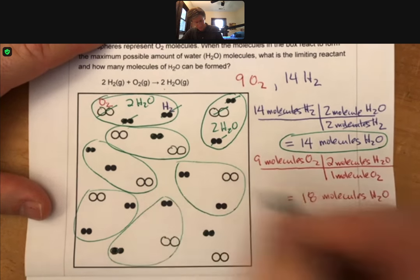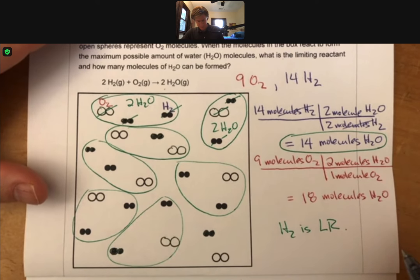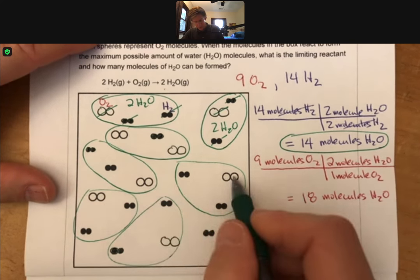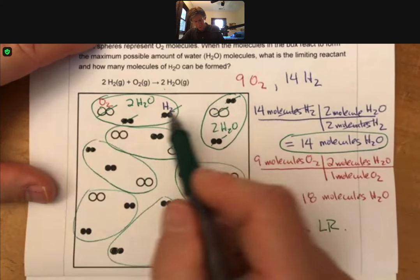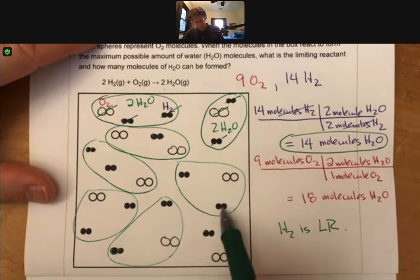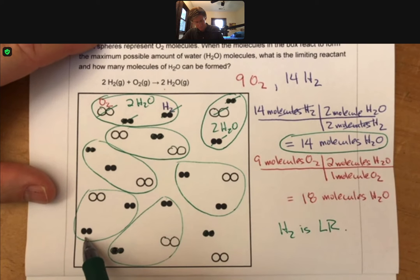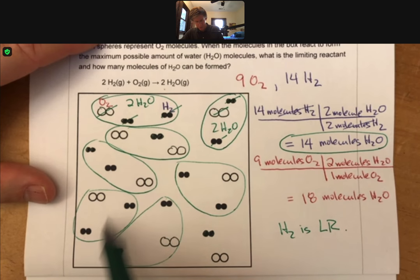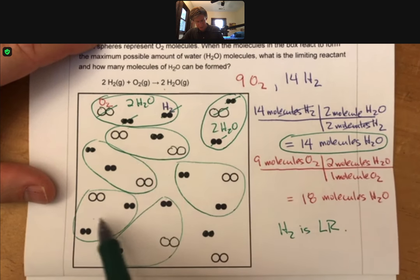Wait, that's not right. Let's see what we got here. Did I count wrong? 4, 5, 6, 7, 8, 9, 1, 2, 3, 4, 5, 6, 7, 8, 9, 10, 11, 12, 13, 14.